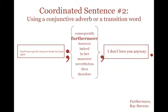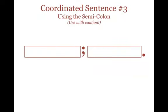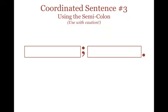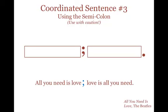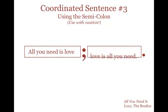This brings us to coordinated sentence number three: using the semicolon to join two independent clauses. Caution — this structure should be used sparingly, as it is often used incorrectly. Remember that both clauses need to be independent. Think of the semicolon as an equal sign; the phrases oftentimes reiterate the same idea. For example: 'All you need is love; love is all you need.' These two independent clauses have a very strong relationship to each other, thus the use of the semicolon is appropriate.